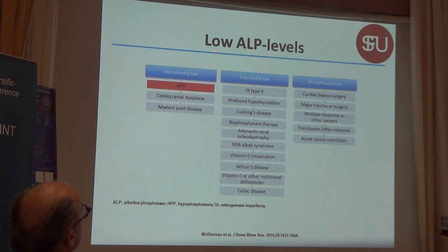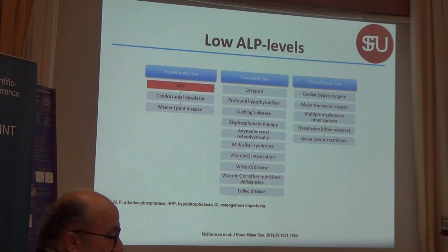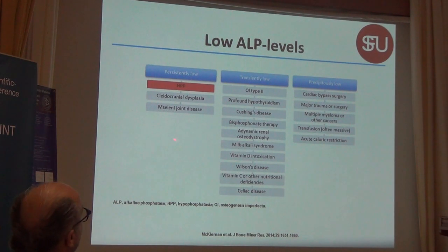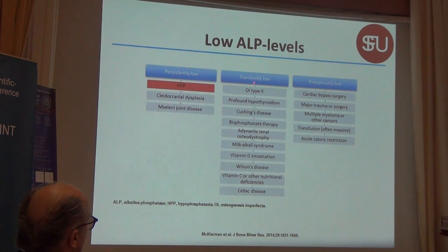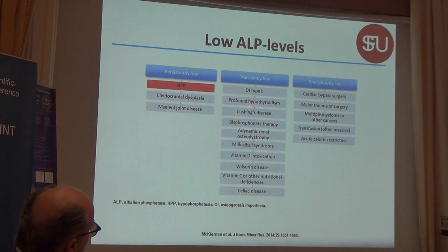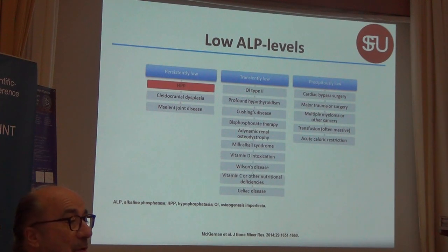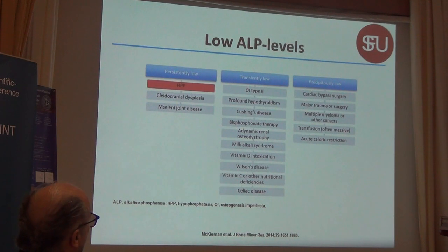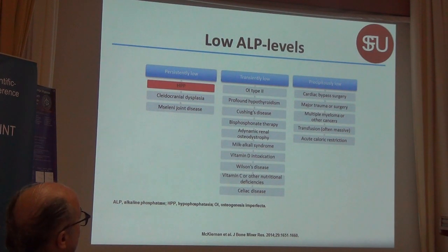There are different possibilities for low alkaline phosphatase levels in some very rare diseases and in HPP. It can be transiently low in osteogenesis imperfecta, hypothyroidism, Cushing's disease, under bisphosphonate therapy, and probably also under every anti-resorptive medication. Low alkaline phosphatase can also be found during cardiac therapy or other interventions.